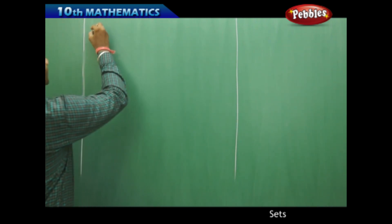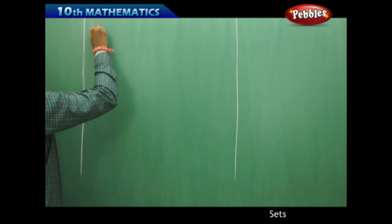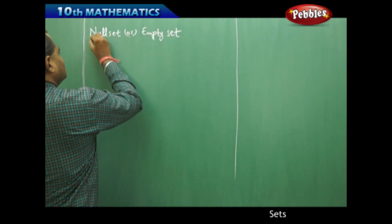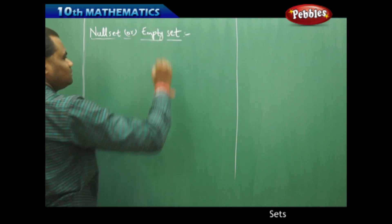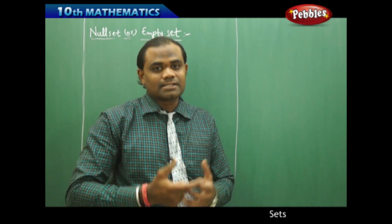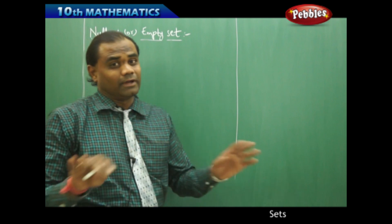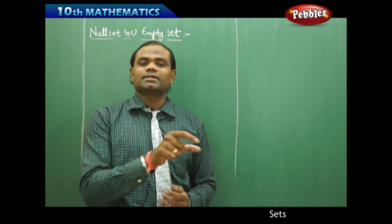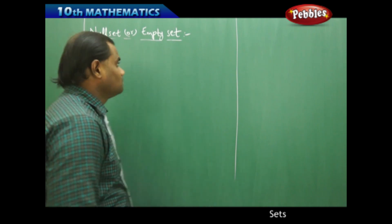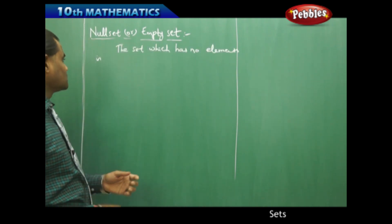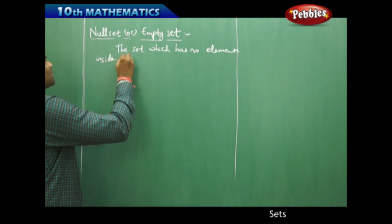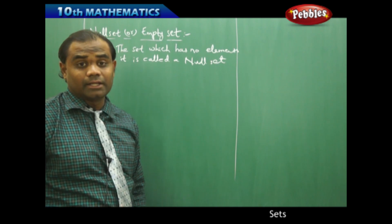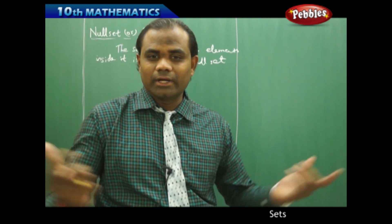Coming to the null set — it is also called the empty set. The word 'empty' tells us there is nothing inside the set. The word null, or nullified, or empty makes us understand that this set does not consist of any elements. So by definition, a set which has no elements inside it is called a null set or an empty set. It is empty — no elements inside it.